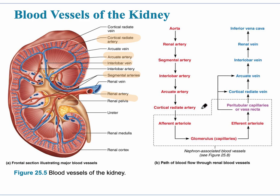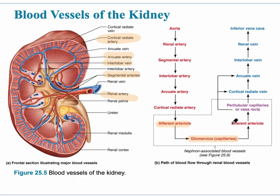The cortical radiate artery leads to the blood vessels found in the nephron — the afferent arteriole. Blood vessels within the nephron go from the afferent arteriole to the glomerulus, which are high-pressure capillaries. That leads to the efferent arteriole, and then to one of two different capillaries: the peritubular capillaries or the vasa recta.